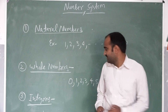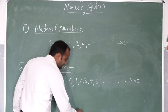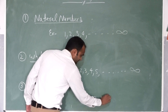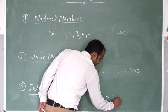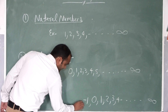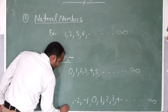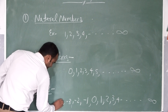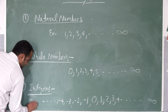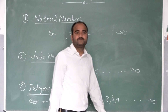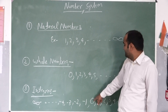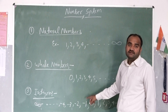Negative numbers means you start from 0, then 1, 2, 3, 4 to infinity, and minus 1, minus 2, minus 3, minus 4 to minus infinity. Integers is formed by whole numbers and negative numbers.